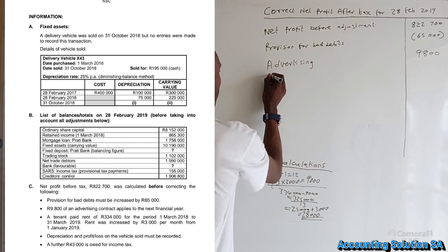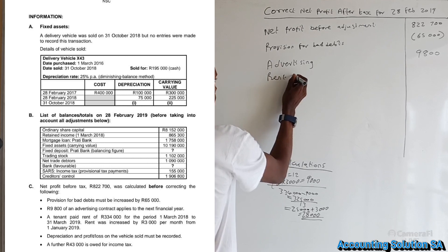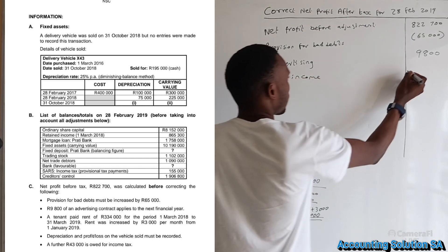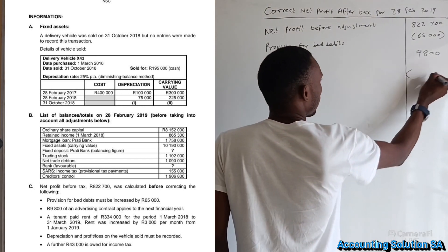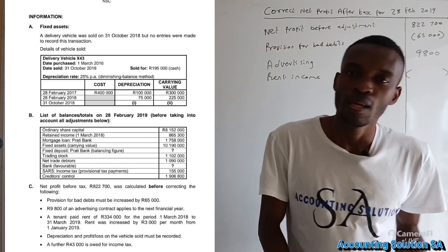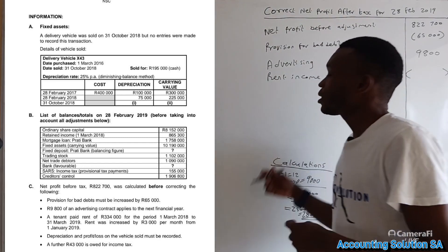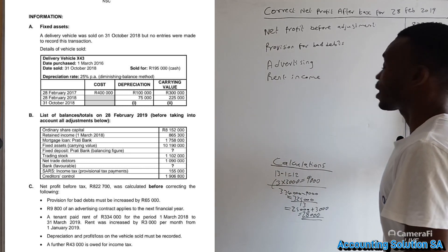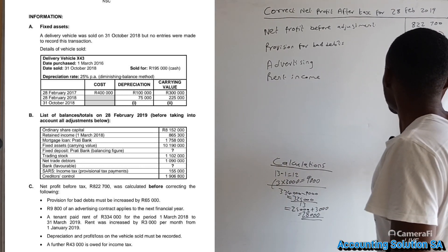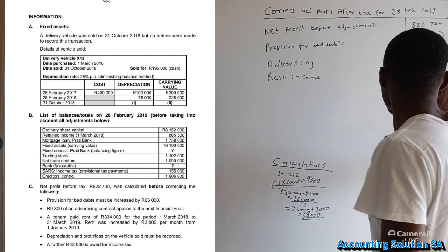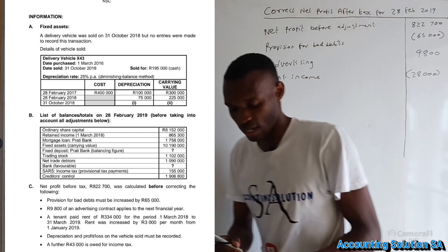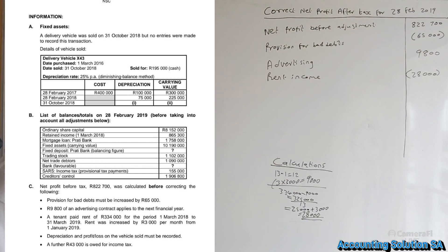The rent income of 28,000 paid in advance is not allowed under this year's income statement. This income must be subtracted — recorded as a minus 28,000 — and will be added back next year.